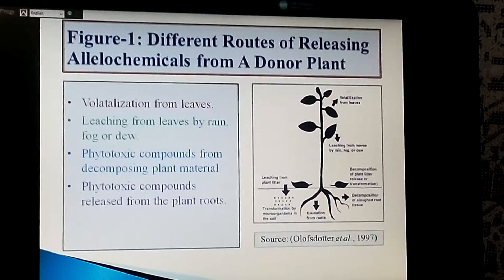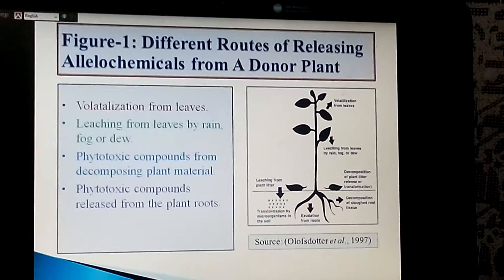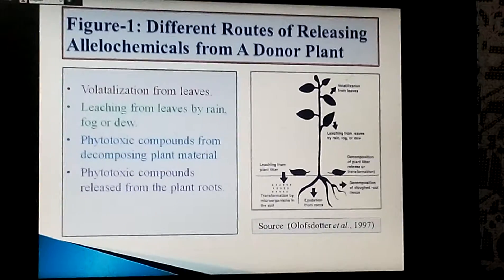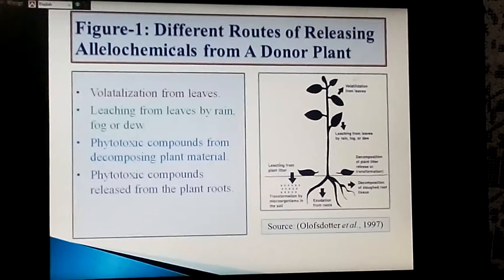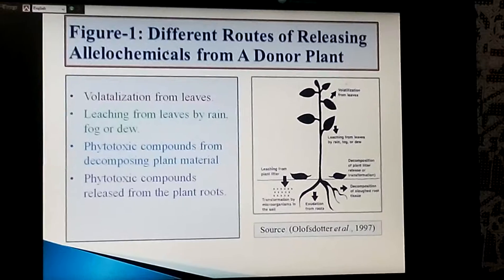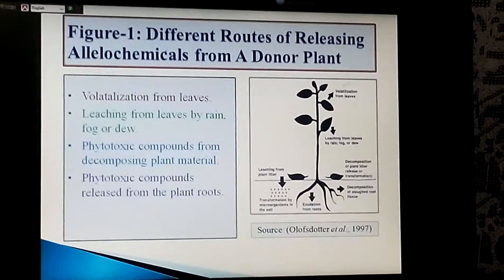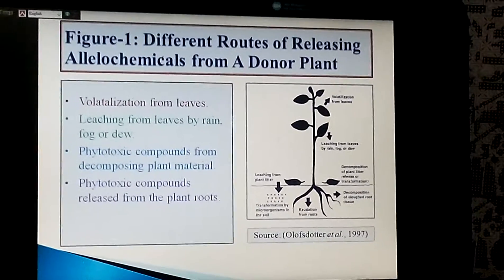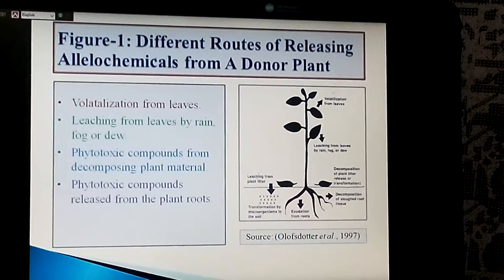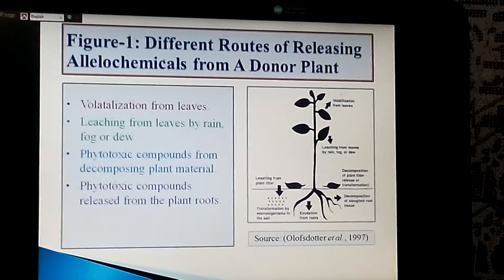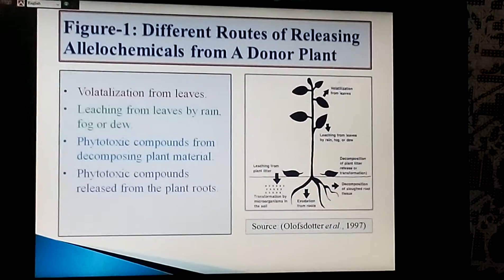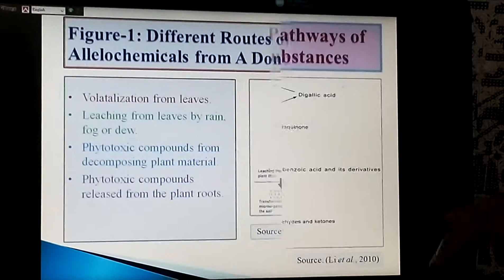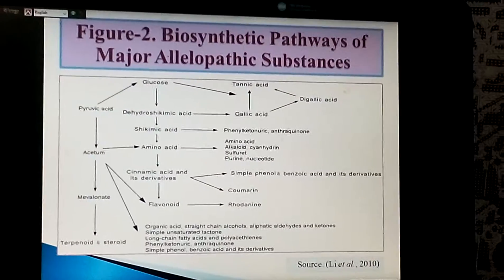Allelochemicals can be released by volatilization from leaves — volatilization being the vaporization of any dissolved solvent — by leaching from leaves by rain, fog, or dew — leaching being the downward movement of a soil liquid through soil horizons — by phytotoxic compounds from decomposing plant material, and by phytotoxic compounds released from plant roots.